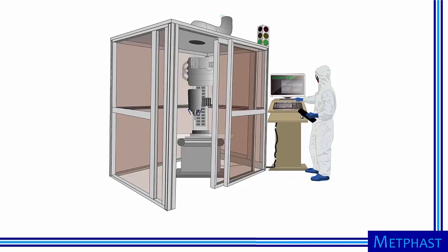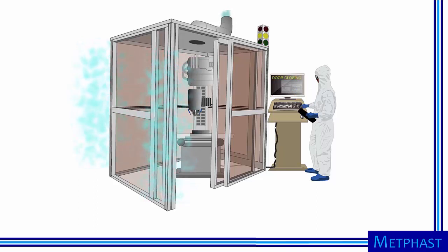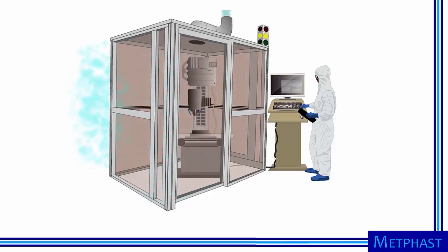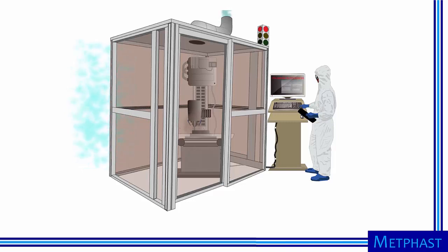Here we show a full enclosure for a machining process. The process is fully enclosed with a door that allows access to the machine for service or part change-out. Air from outside the enclosure is pulled in through any gaps. The door is essentially a large gap, and when open, air velocity into the door is slow. When the door is closed, the gaps are small and the inward velocity can easily keep contaminants inside the enclosure.